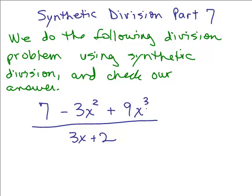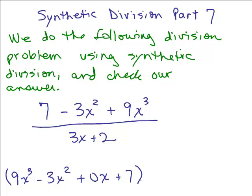We have a polynomial in the numerator and we want to write it in descending order. Starting with the highest degree: 9x cubed, then minus 3x squared. There's no x term, so we put 0x, and then the constant term is plus 7. So we have 9x cubed minus 3x squared plus 0x plus 7, divided by 3x plus 2.